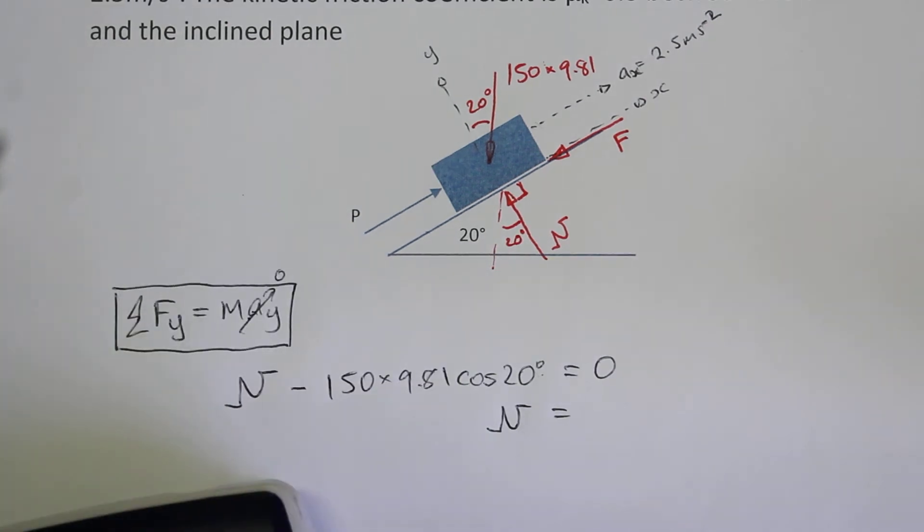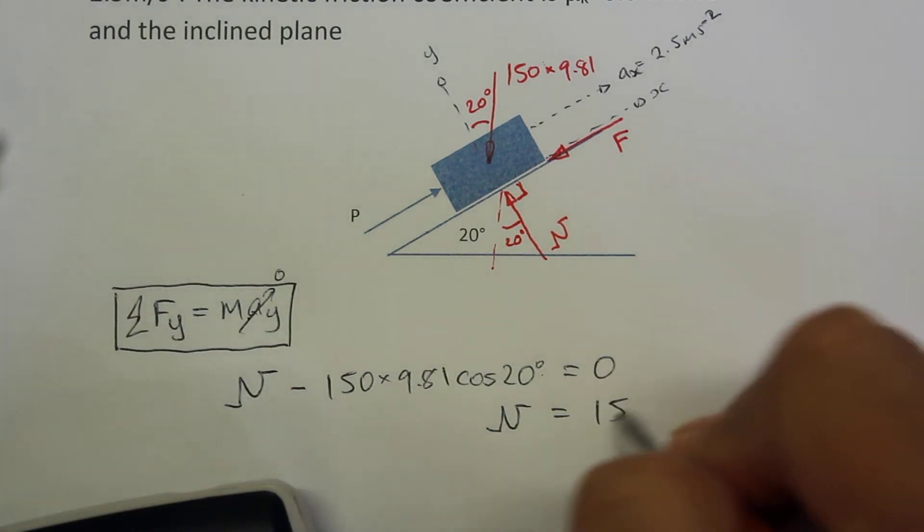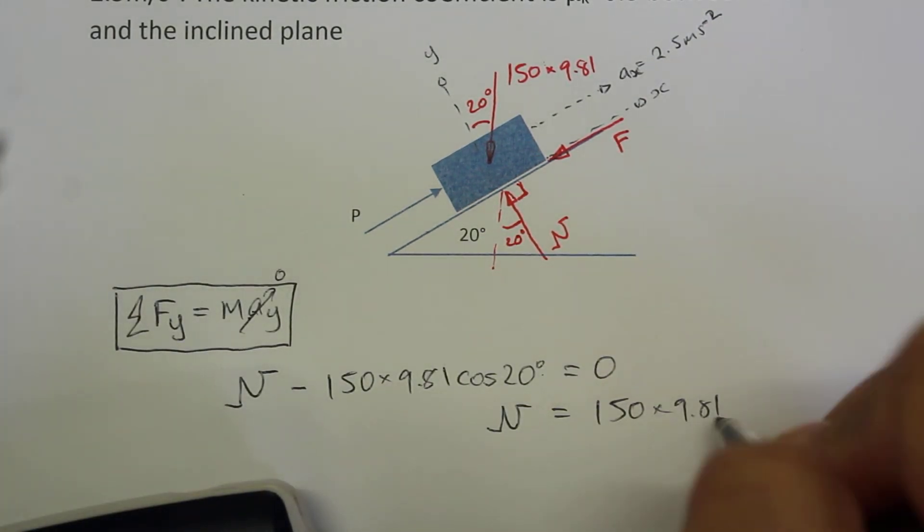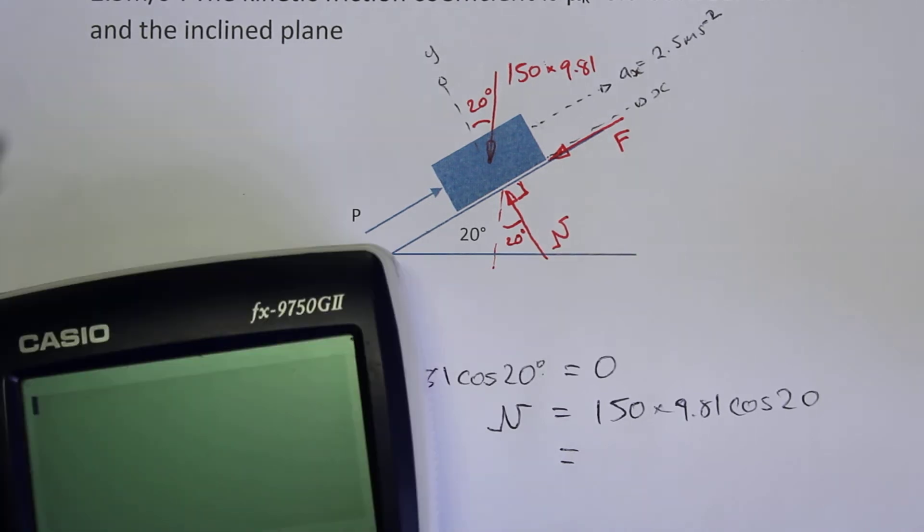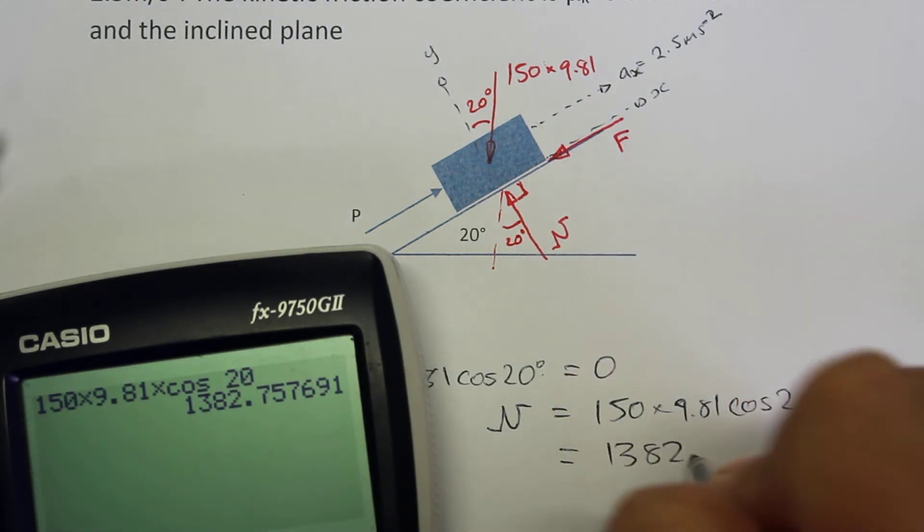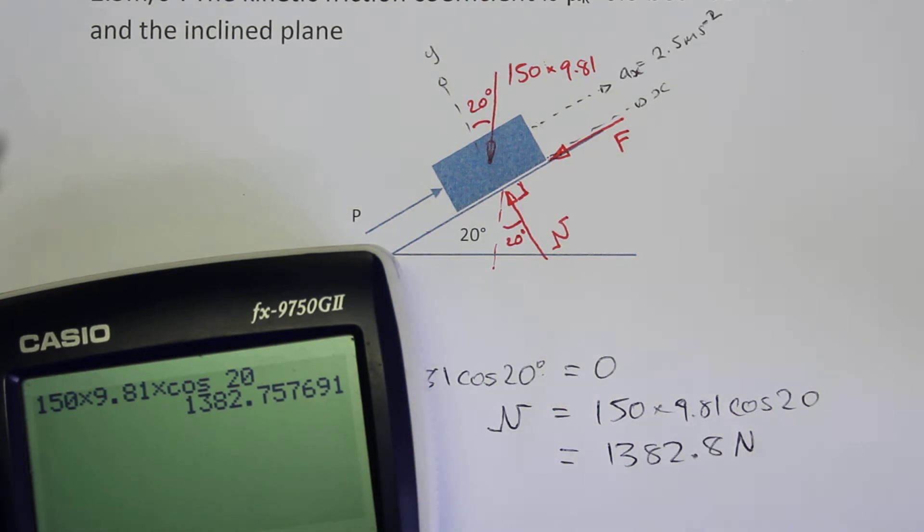So we get the normal force equal to 150 times 9.81 times cosine of 20, and we get 1382.8 newtons.